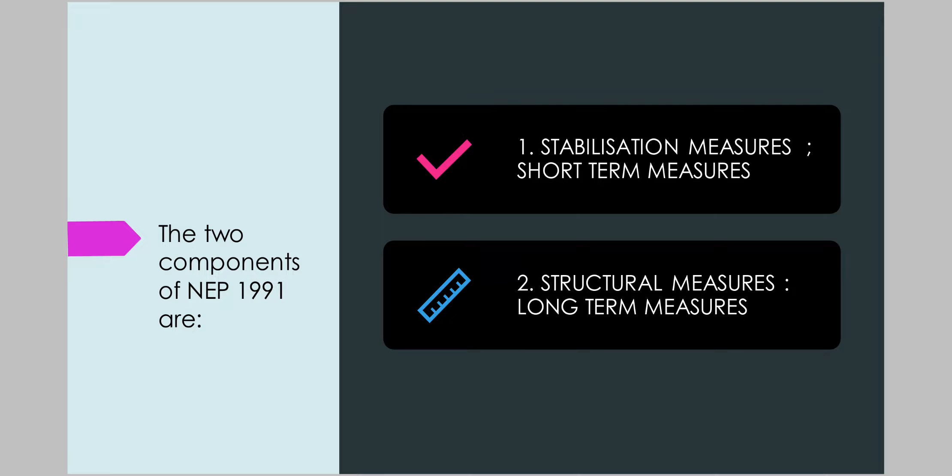NEP 1991 was initiated in two major steps. Firstly, stabilization measures, which were short-term measures aimed at rectifying immediate crises like inflation and balance of payment.